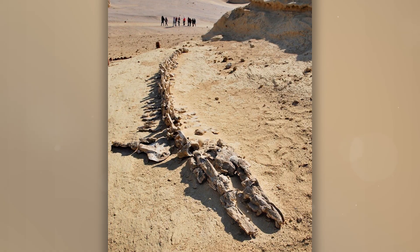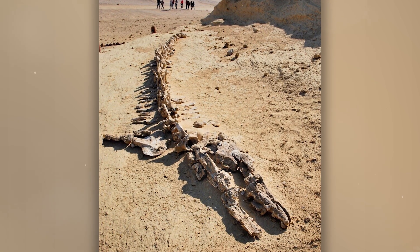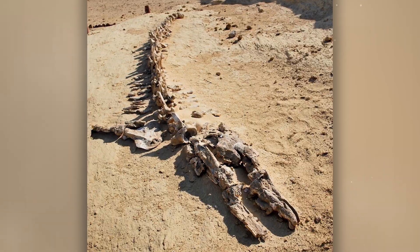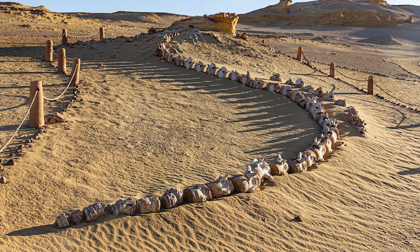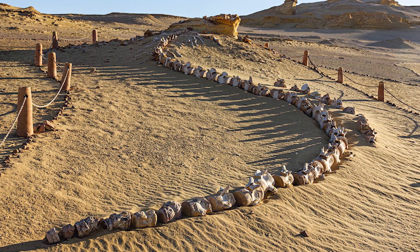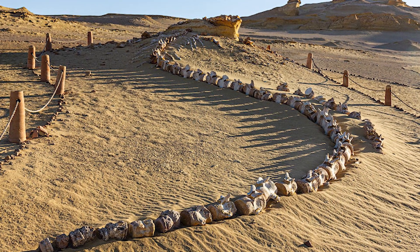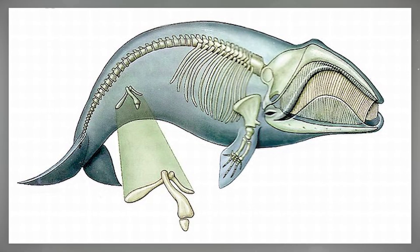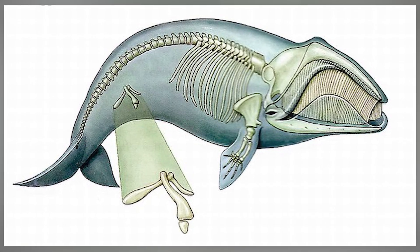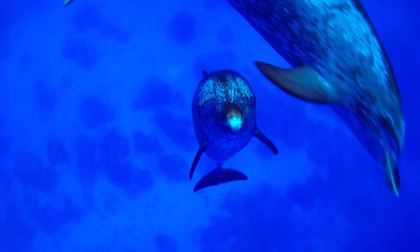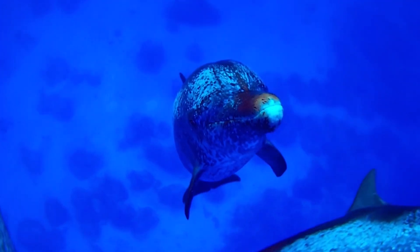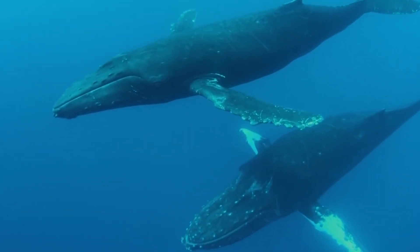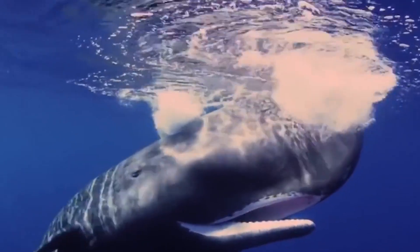Eight years ago, a complete skeleton of an 18-meter basilosaurus with the remains of another whale inside was found in Egypt. If you look inside the body of a modern whale, you can find real hind limbs — these body parts have not disappeared but are hidden inside, serving to attach the muscles of the genital organs. Modern groups of cetaceans — the toothed odontoceti and the baleen mysticeti — appeared in the late Eocene about 40 million years ago.